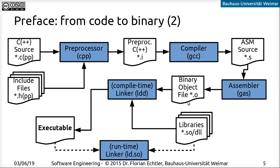Several object files, depending on how your program is structured, are taken by the compile-time linker — a program called LDD — which produces the executable file. When you actually run the executable, the runtime linker is invoked, taking care of loading libraries that the executable needs. So linking has two stages: at compile time, all the machine code objects are combined into one executable; and at runtime, the runtime linker loads additional libraries the program needs into memory.